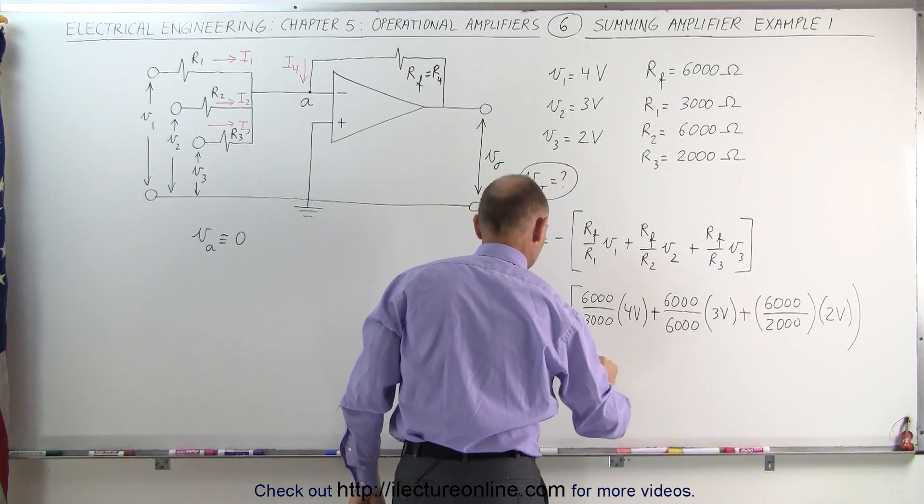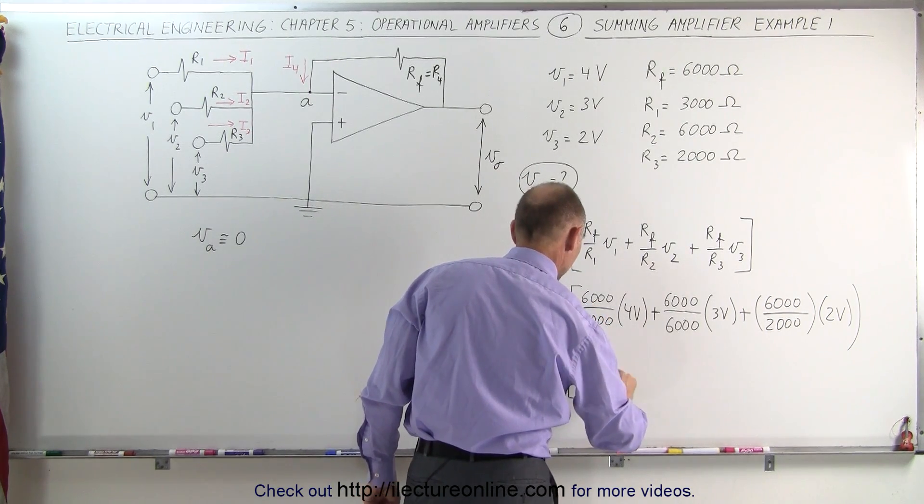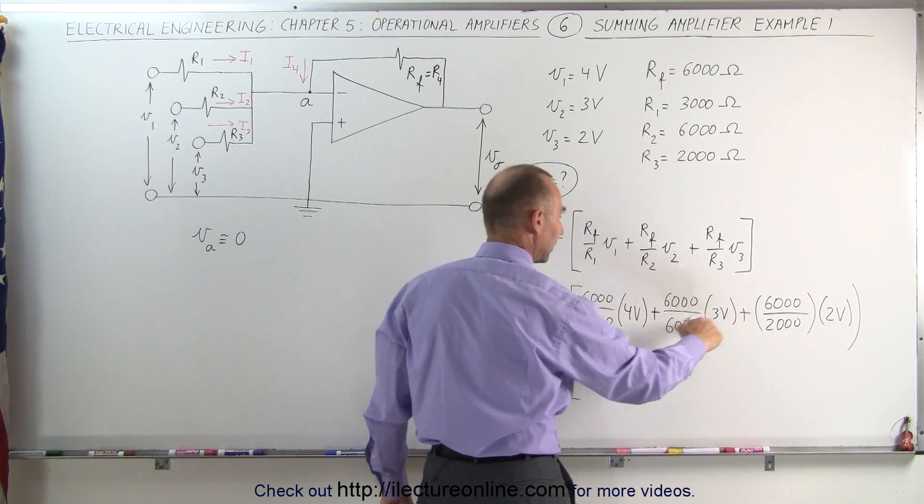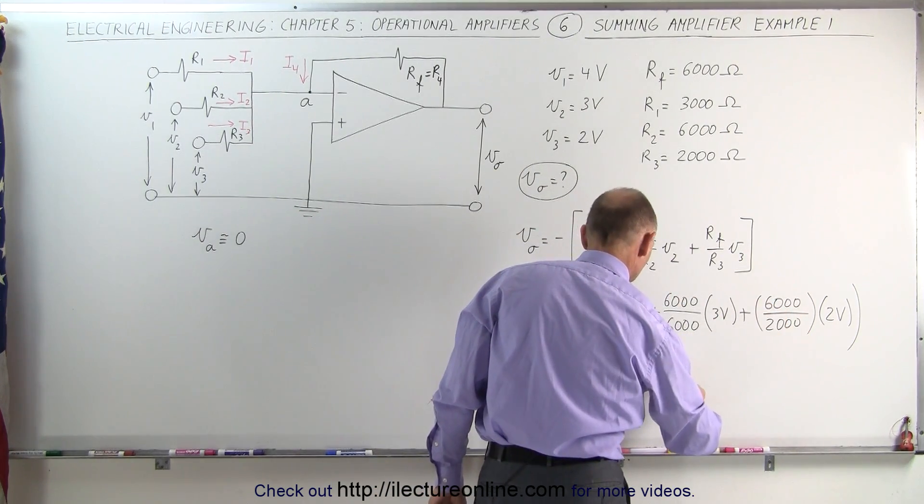So this is equal to the negative of 6,000 divided by 3,000 is 2 times 4 volts, which is 8 volts, plus that's 1 times 3 volts, plus that's 3 times 2 volts, which is 6 volts.